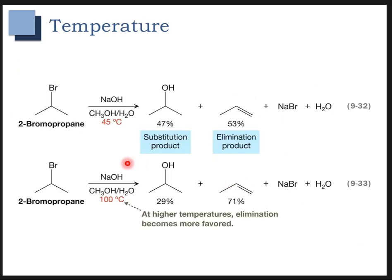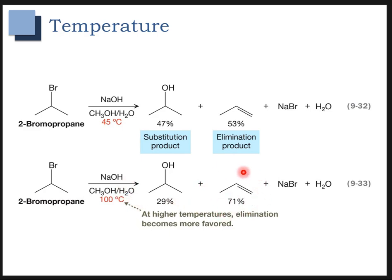Finally, we're going to look at temperature. An increase in temperature is going to favor elimination products. This reaction uses a strong base — hydroxide — and we're heating it at 45 degrees, giving pretty close to a 50-50 mixture of substitution versus elimination. As we heat up the reaction to 100 degrees under the same conditions, we're getting more of the elimination product. So if you want to encourage elimination and substitution is competing, just add heat.